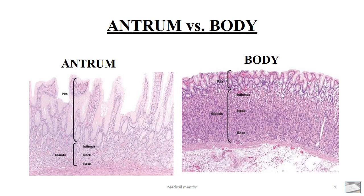In this figure we see the comparison between the antral mucosa and the body mucosa. What we need to remember is that the antral mucosa and the cardiac mucosa are similar structure-wise. Similarly, the mucosa of the body and the fundus are similar structurally. The antral pits are much deeper in comparison to the pits of the body. The antral pit comprises around 50 percent or more of the entire mucosal thickness, in comparison to the body where the gastric pits comprise less than 25 percent of the entire thickness of the mucosa.